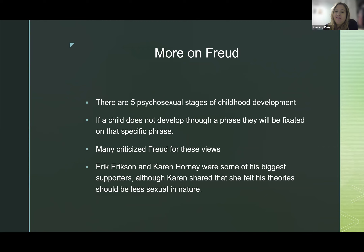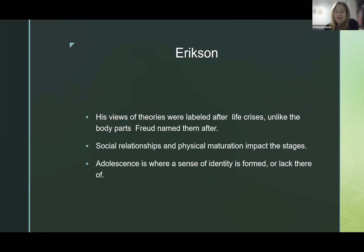Freud talked about there being five psychosexual stages of child development. If a child does not develop through each of these phases, he said you'll be fixated on a specific phase. This was mainly criticized for being very radical in its views. Erikson and Karen Horney were some of the biggest supporters of these theories, but Karen shared that she felt the theories were very radical and should be less sexualized in nature. Erikson's views were labeled after life crises, unlike the body parts Freud named them after. There were social relationships and physical maturation impacts at each stage, and adolescence is where a sense of identity is formed — or lack thereof.